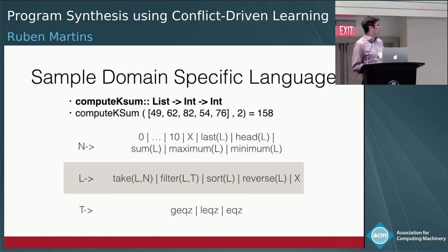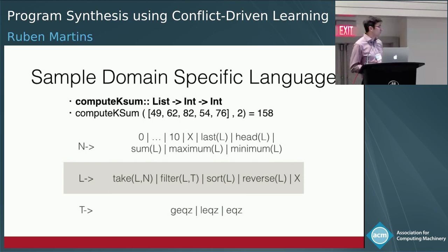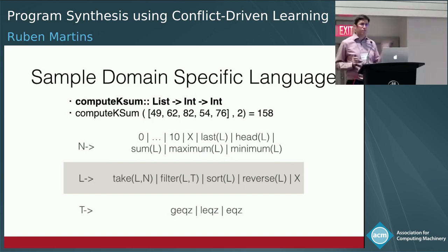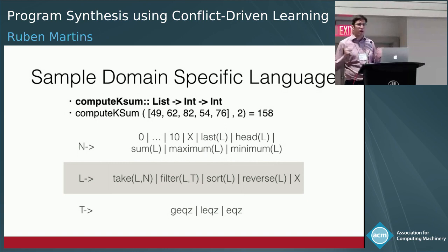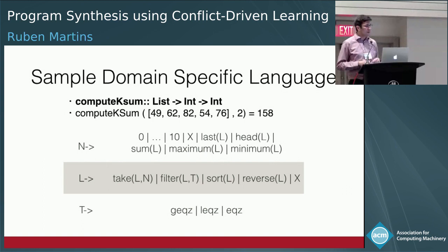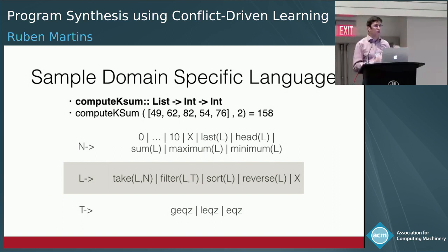Let me introduce a small domain-specific language. We have operators that return an integer — constants 0 to 10, the input k, or operators like last and head returning the last or first element of a list. We also have list operators: take takes a list and integer n and returns the first n elements; filter takes a list and predicate t (≥0, ≤0, or =0); and sort, reverse, or the input list.